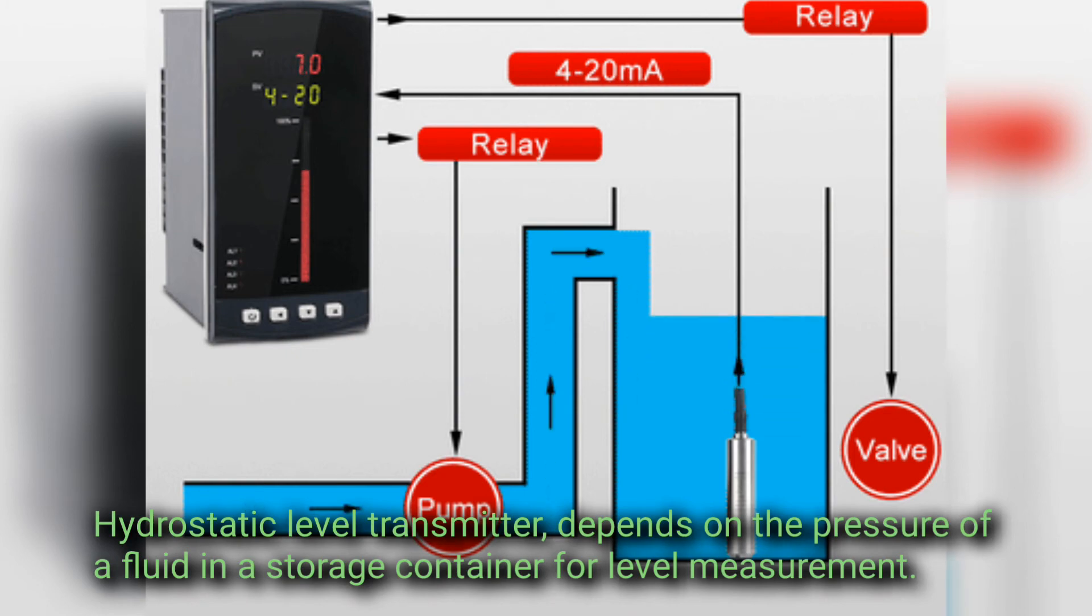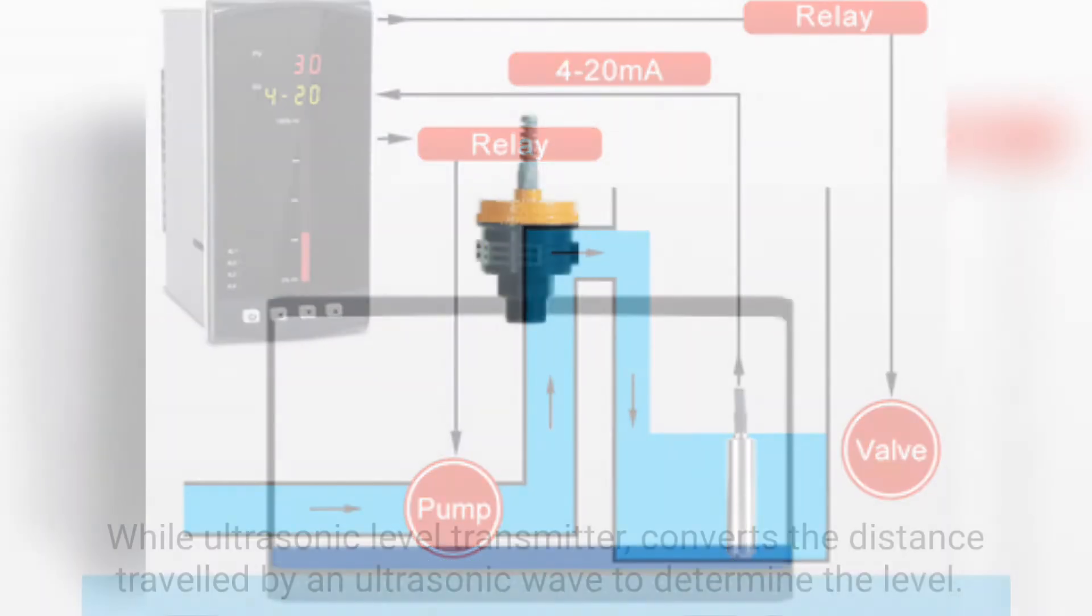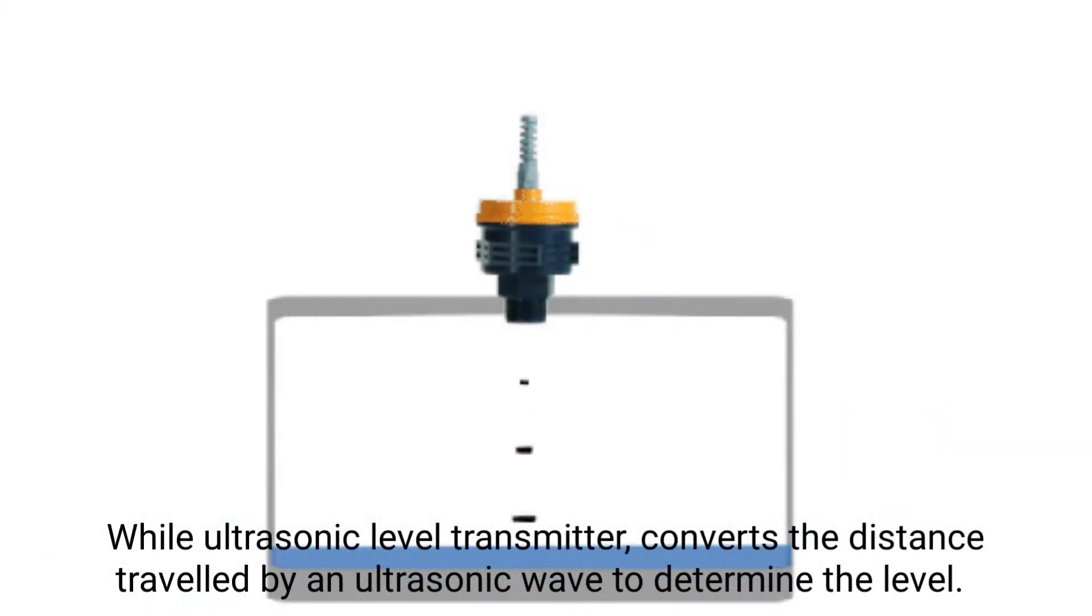Hydrostatic Level Transmitters depend on the pressure of a fluid in a storage container for level measurements, while Ultrasonic Level Transmitters convert the distance traveled by an ultrasonic wave to determine the level.